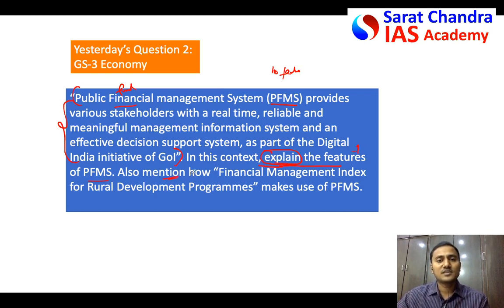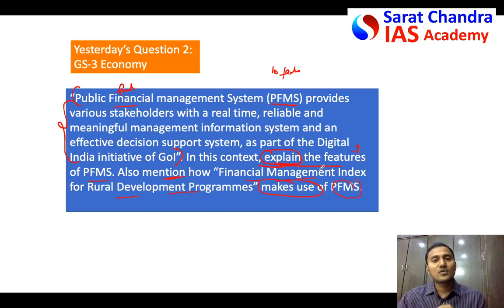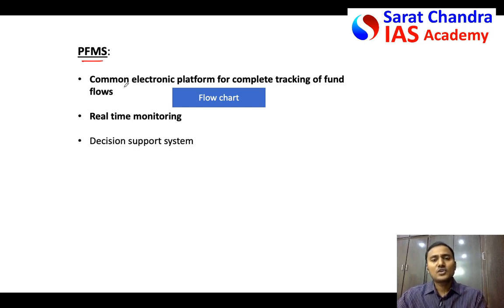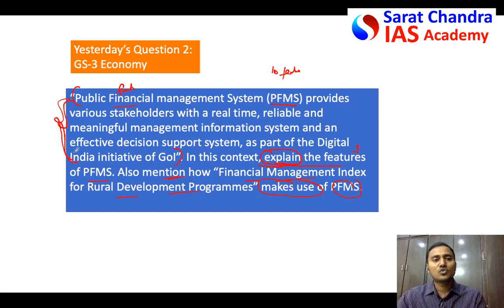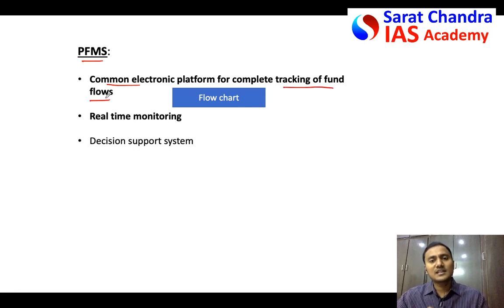The second part asks: mention how the Financial Management Index (FMI) for rural development programs makes use of PFMS. Students often write everything they know about FMI, but the question asks specifically how this index makes use of PFMS — address that exactly to get marks. In the introduction, briefly mention what PFMS is in three or four lines, but don't repeat what the question already gave. Write your own points — for example, it is a common electronic platform to track funds from the central government level to the local consumer level.